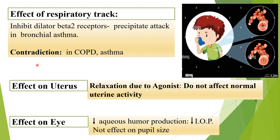Effect on the uterus: relaxation due to agonist action does not affect normal uterine activity. In the eye, beta blockers reduce aqueous humor production and decrease intraocular pressure, without affecting pupil size.